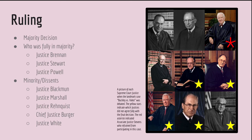As for the minority dissents, Justice Blackmun disagreed completely, saying that contribution limits at all were fully unconstitutional, including personal contributions. Justice Rehnquist believed that it was unconstitutional to apply public funding provisions to minor parties. Chief Justice Burger believed that contribution limits were also unconstitutional, and that the disclosure of campaign contributions was unconstitutional as well. Justice White disagreed with the Federal Election Commission's appointment process. Justice Marshall disagreed with limiting personal contributions and expenditures by candidates to their own campaigns.